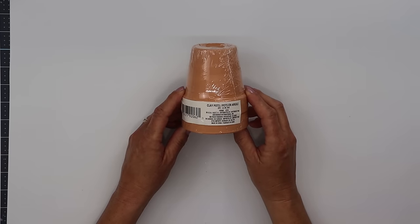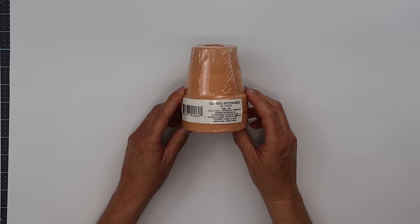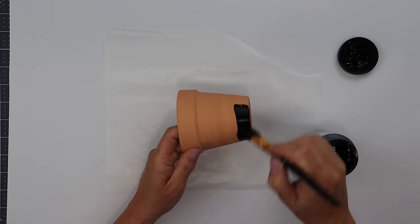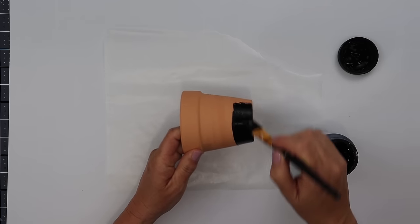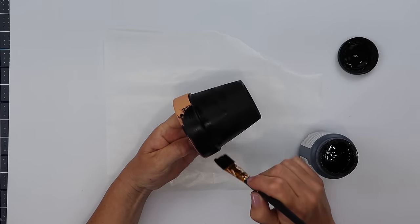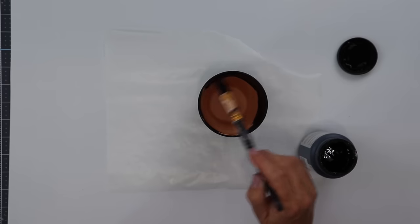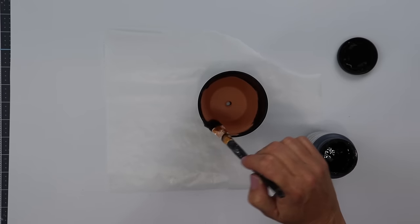For our first project we're going to be using one of Dollar Tree's three and a half inch terracotta pots and we'll give that one coat of black chalk paint. I also made sure to paint the top rim as well as inside the pot a little bit.